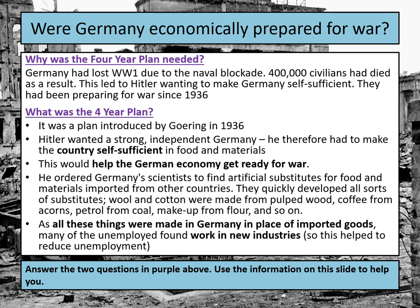From the starter you've done with your teacher, the Nazis had two economic aims when they first came to power in 1933. They wanted to solve the problems of unemployment — to give people work and bread — but they also wanted, in the long term, to prepare Germany for a future war. You'll need to answer two questions in purple about why the Four-Year Plan was needed and what it was.